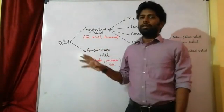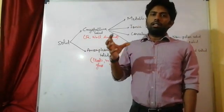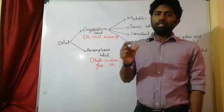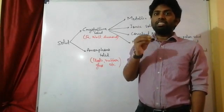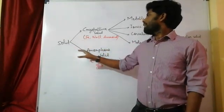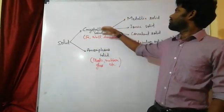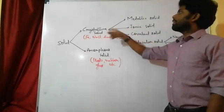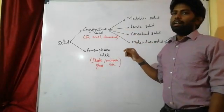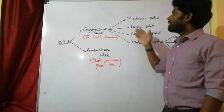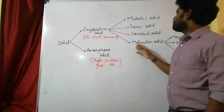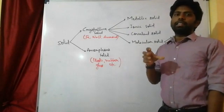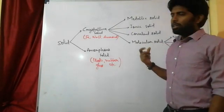To recap: solids have definite shape, mass, and volume; low intermolecular distance; high intermolecular force; and cannot be compressed. Crystalline solids include iron and other metals. Covalent solids like diamond and graphite are also crystalline. Molecular solids like ice (H₂O — liquid when melted, but crystalline when frozen) are also crystalline solids.